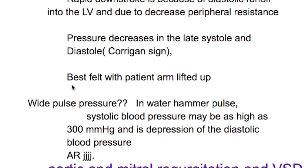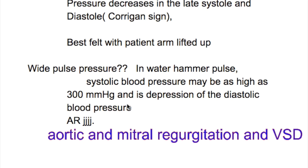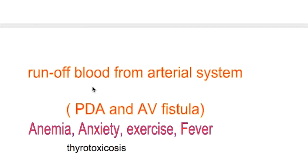Water hammer pulse is best felt with the patient's arm lifted up. Why is there a wide pulse pressure in water hammer pulse? Systolic blood pressure may be as high as 300 mmHg and there is a depression of the diastolic blood pressure. It is also seen in mitral regurgitation, ventricular septal defect, and in runoff of blood from the arterial system as in patent ductus arteriosus and AV fistula.